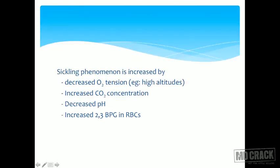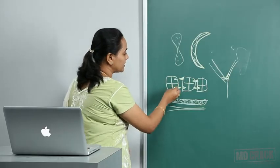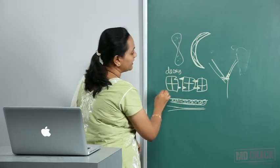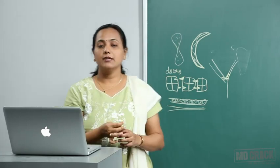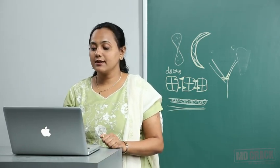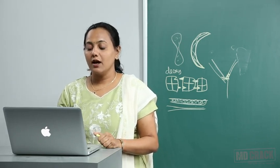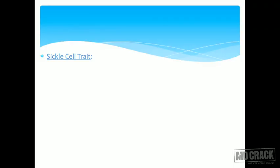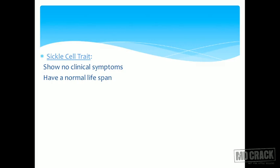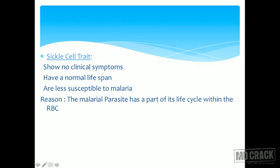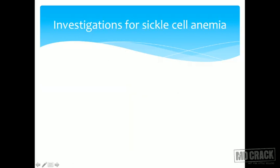Sickling is increased by decreased oxygen tension — for example at high altitudes — because polymerization only occurs in the deoxy state. Increased carbon dioxide concentration, decreased pH, and increased 2,3-BPG in RBCs also increase the sickling phenomenon. Sickle cell trait carriers do not show clinical symptoms and usually have a normal lifespan, but they are less susceptible to falciparum malaria, as lysis of RBCs interrupts the parasite's life cycle.